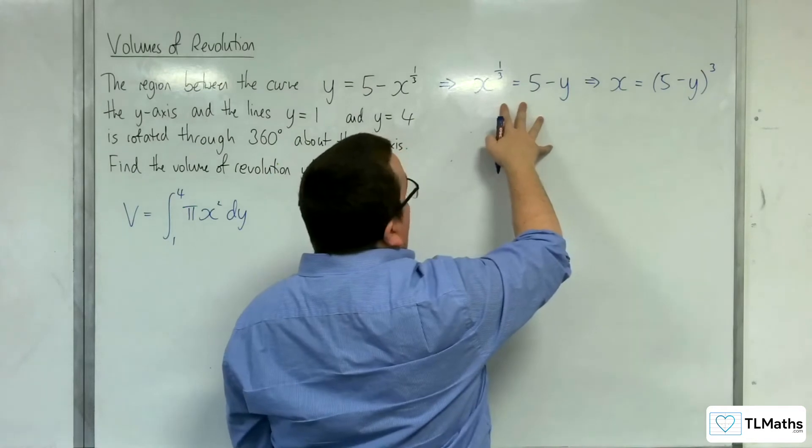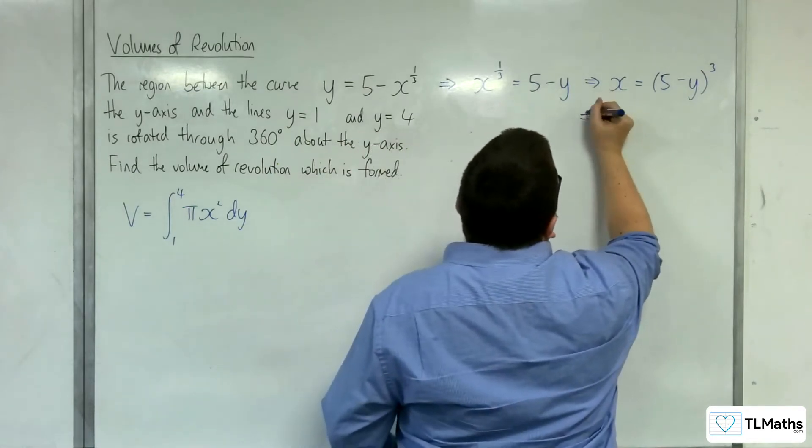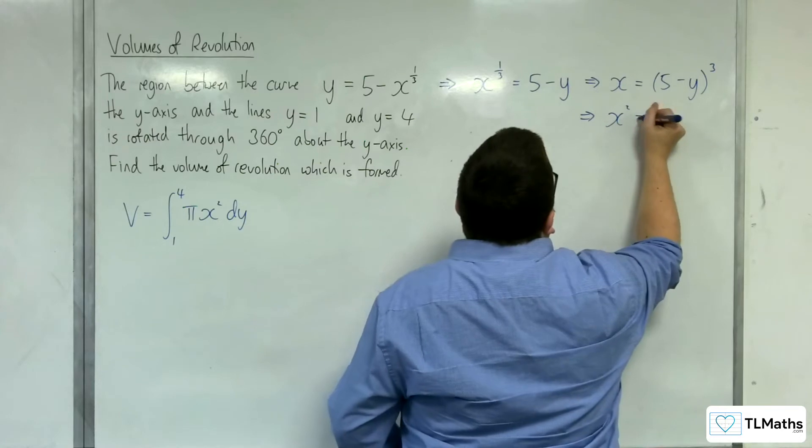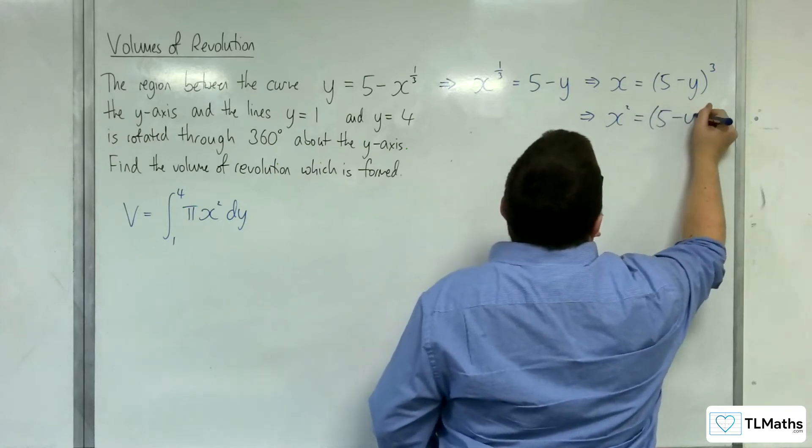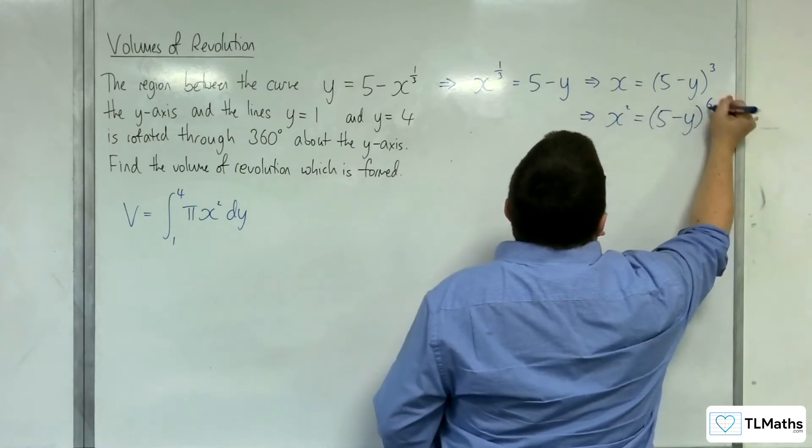Now, I could have done to the power of 6 both sides here, okay, straight off the bat. This is really just to demonstrate us getting there. So x squared equals 5 take away y to the power of 6.